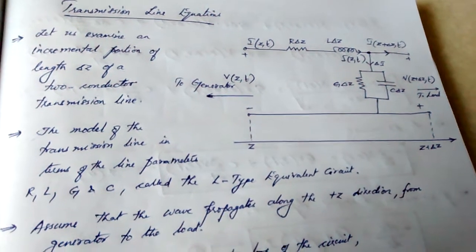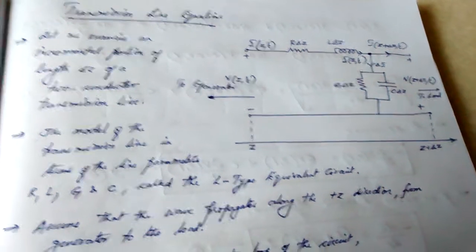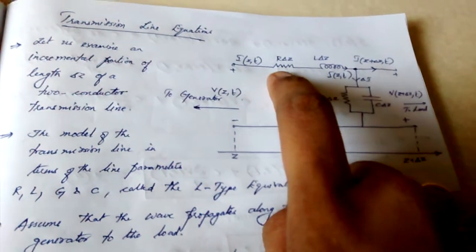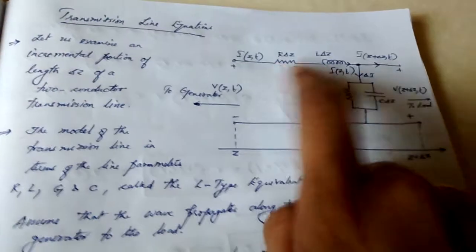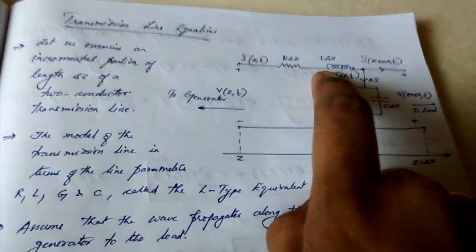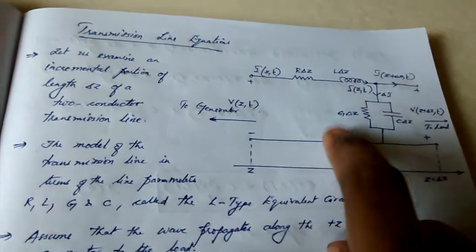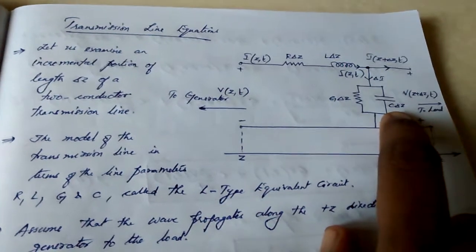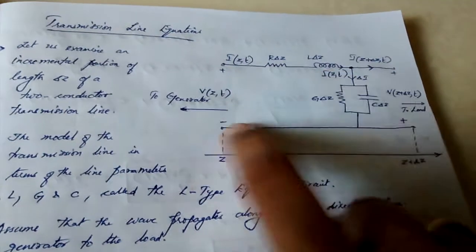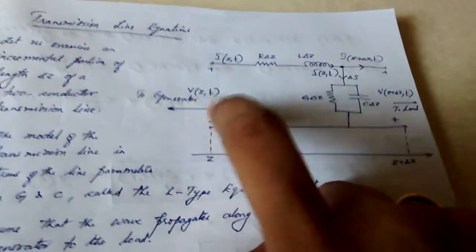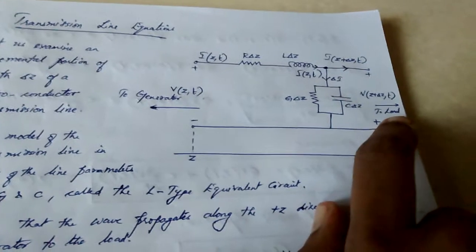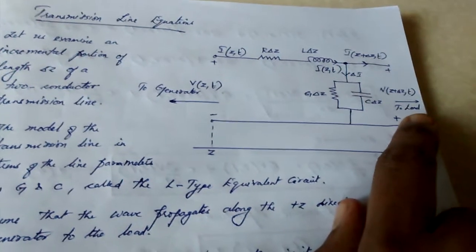We are dealing with the derivation of transmission line equations. As you can see, a transmission line has the following parameters: resistance, inductance per unit length, resistance per unit length, conductance per unit length, and capacitance per unit length. This transmission line has two ports: an input port towards the generator side and an output port towards the load side.